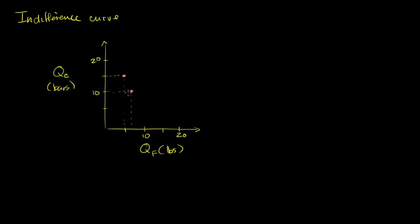In general, I could plot all of the different combinations that give me the exact same total utility, and it might look something like this. I'll draw it in magenta — it might look something like this, and then keep going all the way down. So any point on this curve, I'm indifferent relative to my current predicament of 15 bars and five pounds of fruit. That is my indifference curve.